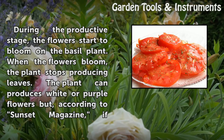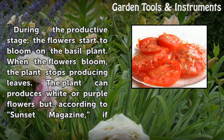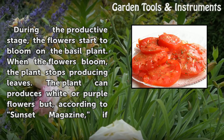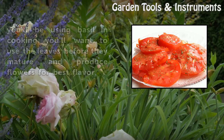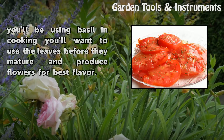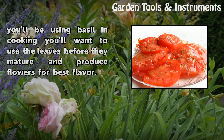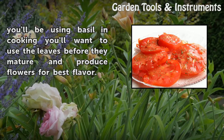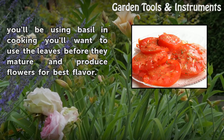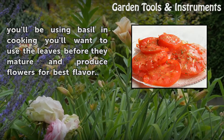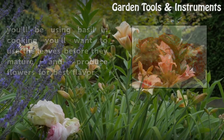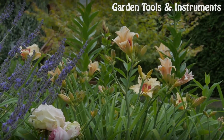The plant can produce white or purple flowers, but according to Sunset Magazine, if you'll be using basil in cooking you'll want to use the leaves before they mature and produce flowers for best flavor.